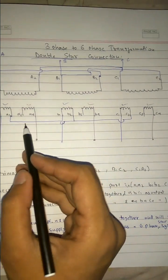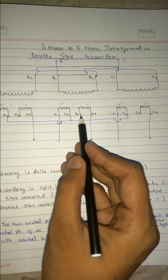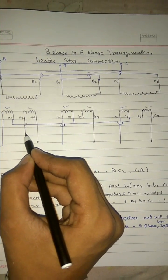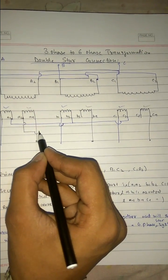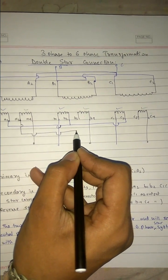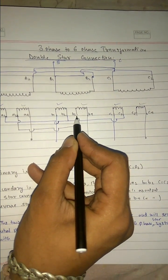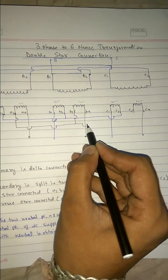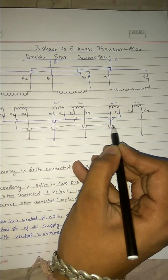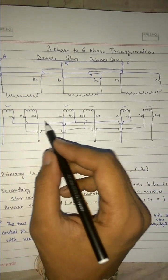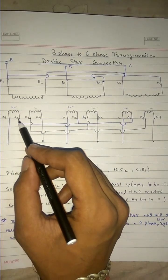And these 3 are connected together. a3 will be connected with b3, and this again will be connected with c3.